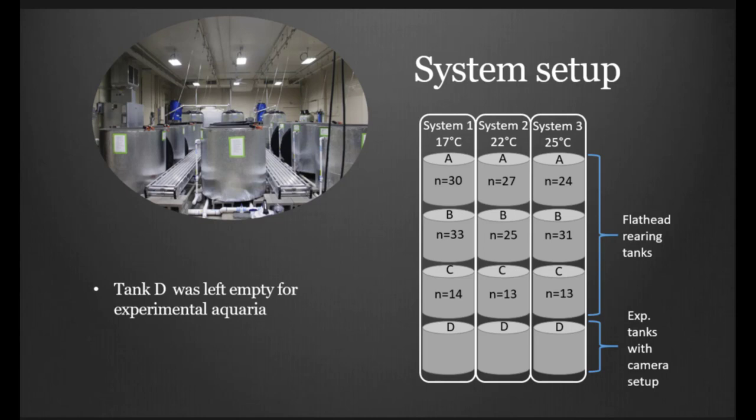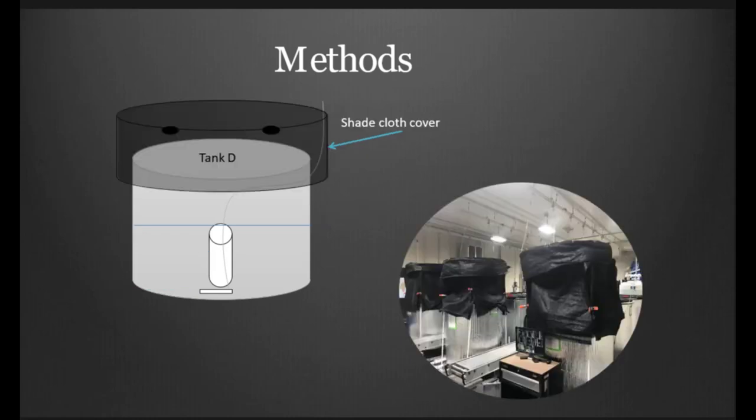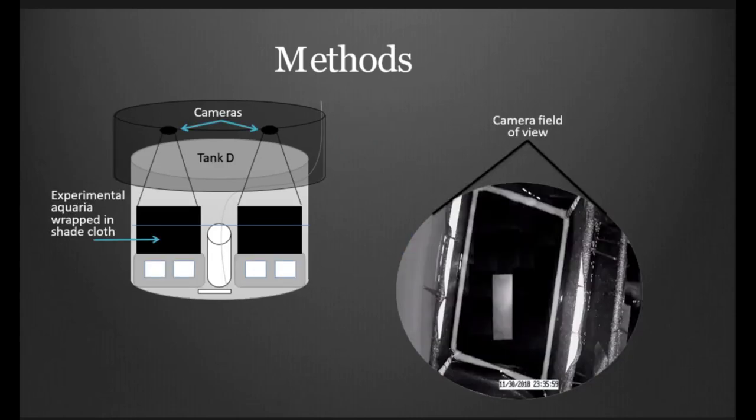Tank D was actually intentionally left open. This helped us be able to keep water quality the same through our system once we switched over to our experimental aquaria. Each of our tanks was set up in the same manner. The oxygen line coming in from the ceiling and the standpipes maintaining water around half full. We had shade cloth over each of our rearing systems as well as the experimental tanks. This prevented stress from lighting and also from our daily work conducted within the laboratory. In tank D of each system, we had two experimental aquaria set up in each tank and they were wrapped in shade cloth to prevent the interaction of the flathead catfish that we were actually experimenting on. We had two cameras set above each of the tanks so that we didn't actually have to look in there either. We could look on a computer monitor to see what was going on.